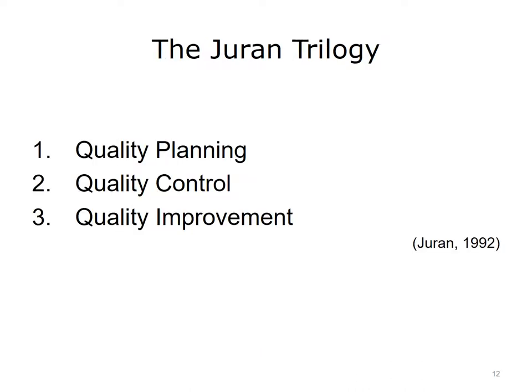The Juran Trilogy provides a model of how an organization can better understand the relationship between processes that plan, control, and improve quality to produce better business results. Dr. Juran created this model in the 1950s, defining managing for quality as three basic, quality-oriented, interrelated processes: quality planning — the process for designing products, services, and processes to meet new breakthrough goals; quality control — the process for meeting goals during operations; and quality improvement — the process for creating breakthroughs to unprecedented levels of performance.